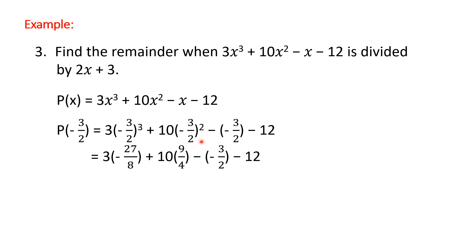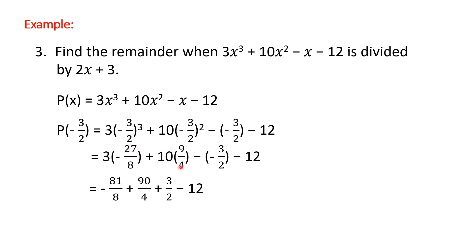For (-3/2)², since the exponent is even the result is always positive: 3² = 9 and 2² = 4, so the result is 9/4. Then we multiply: 3 times -27/8 = -81/8. For 10 times 9/4: 10 times 9 is 90, giving 90/4. Since negative times negative is positive, the next term is +3/2. Copy the -12.